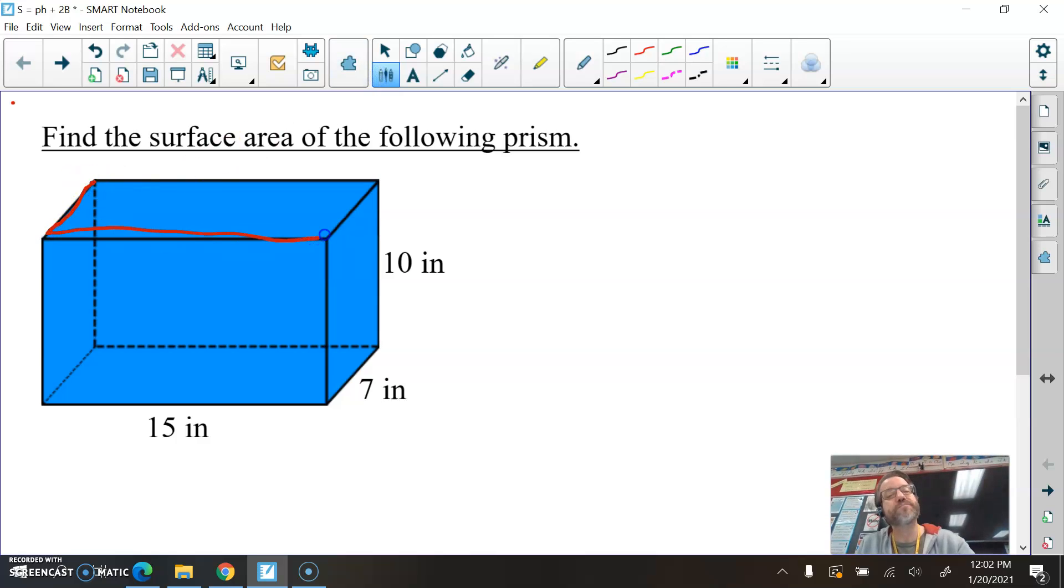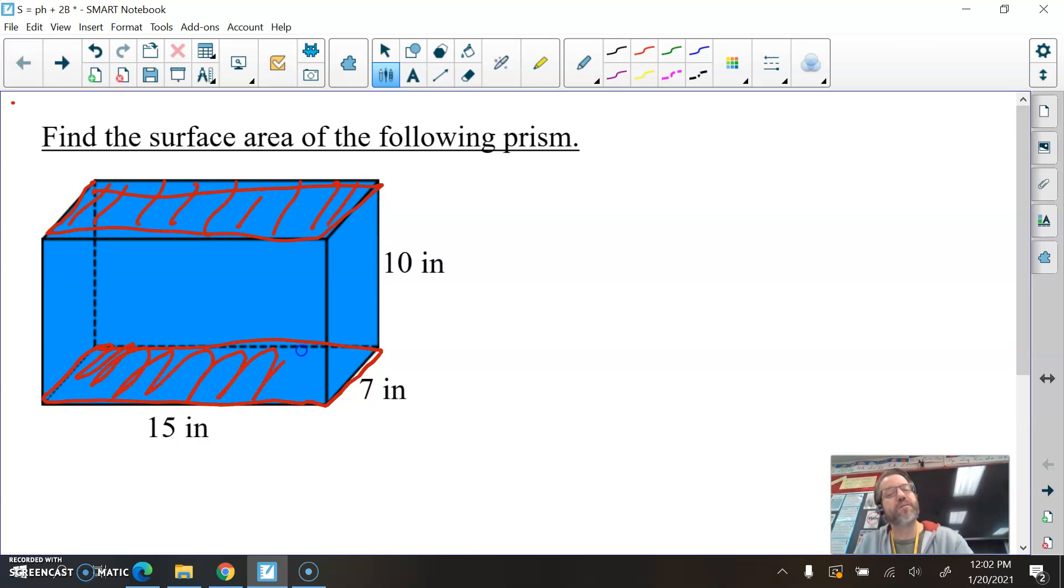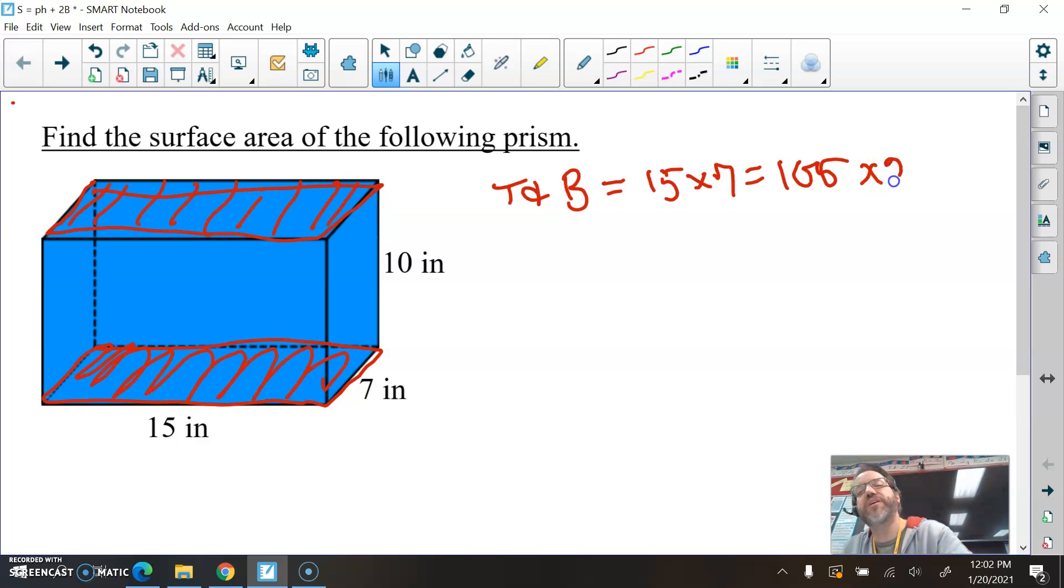I'll shade in the top here. It's pretty messy. But the top is 15 inches long and 7 inches wide. And so is the bottom down here, 15 inches by 7 inches. So there's my top and my bottom. So I'm going to put top and bottom. And in this case, that's 15 by 7, which is 105. Since the top and bottom are the same, I can then multiply that by 2 to get their areas combined. So 105 times 2 is 210.